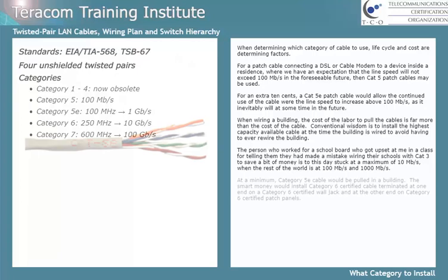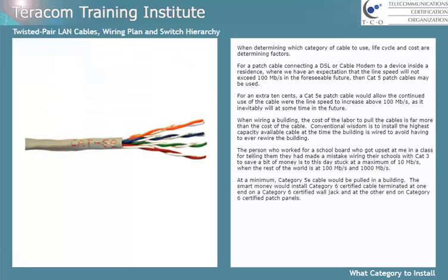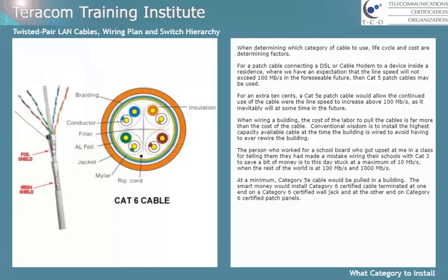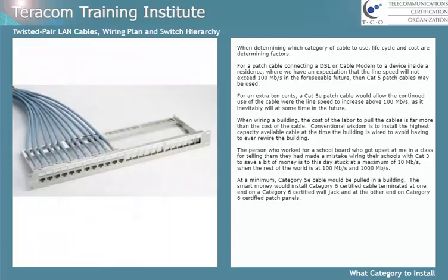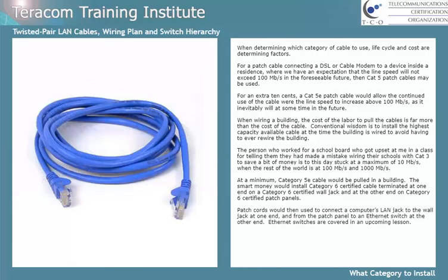At a minimum, Category 5e cable would be pulled in a building. The smart money would install Category 6 certified cable terminated at one end on a Category 6 certified wall jack and at the other end on Category 6 certified patch panels. Patch cords would then be used to connect a computer's LAN jack to the wall jack at one end, and from the patch panel to an Ethernet switch at the other end. Ethernet switches are covered in an upcoming lesson.